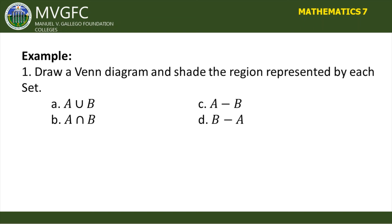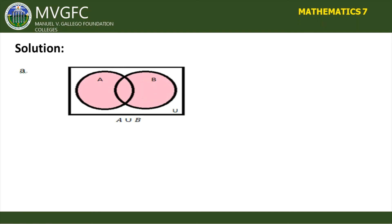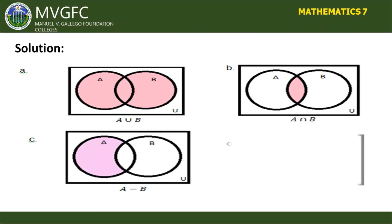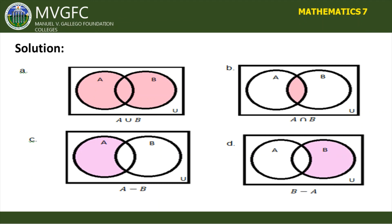To illustrate the operations using a Venn diagram, we shade different regions. For the union of A and B (A ∪ B), both circles — including the middle overlapping part — are shaded. For the intersection of A and B (A ∩ B), only the middle overlapping region is shaded.